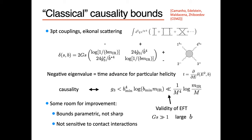Question: These bounds come from imposing no time advance, but in quantum gravity, would we be okay with a small amount of time advance since things are not completely well-defined? That's precisely why this bound is parametric and why we want to do better. The 'much less than' here is encoding exactly that — we're working within EFT in a semi-classical setting. We want a stronger statement about quantum scattering amplitudes. There's room for improvement: these bounds are not sharp, and only the G3 coefficient appears.